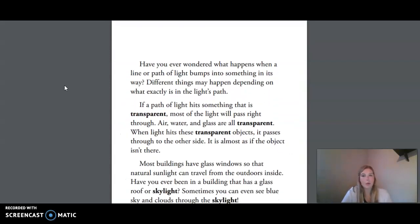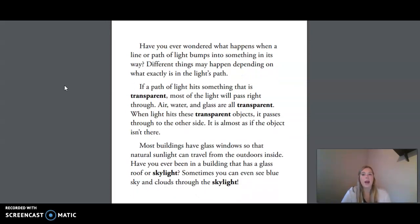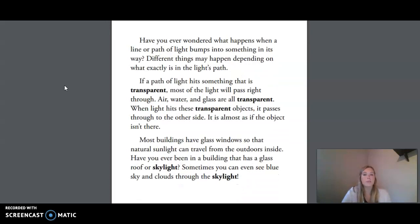Have you ever wondered what happens when a line or path of light bumps into something in its way? Different things may happen, depending on what exactly is in the light's path. If a path of light hits something that is transparent, most of the light will pass right through. Air, water, and glass are all transparent. When light hits these transparent objects, it passes through to the other side. It is almost as if the object isn't there. Most buildings have glass windows so that natural sunlight can travel from the outdoors inside. Have you ever been in a building that has a glass roof or skylight? Sometimes you can see sky and clouds through the skylight.